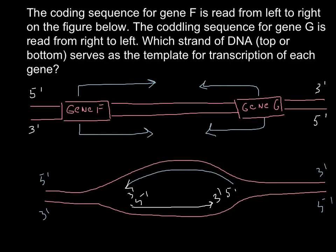And now let's see gene F growing from left to right. So this is gene F, and gene G from right to left. So this is gene G. Gene G would be transcribed from the top strand. So this is the correct answer, and gene F would be transcribed from the bottom strand.